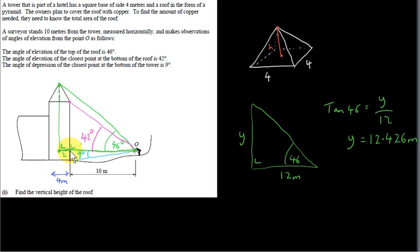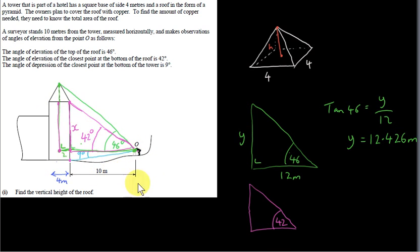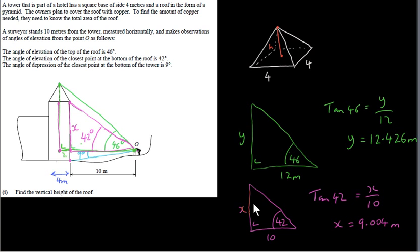Next we look at the purple right-angle triangle. The angle of elevation of 42 degrees gives tan(42°) = X / 10, so X = 10 × tan(42°) = 9.004 meters. This distance X equals the height from O's horizontal level up to the bottom of the roof. The height of the roof H is then Y minus X: H = 12.426 − 9.004 = 3.422 meters.